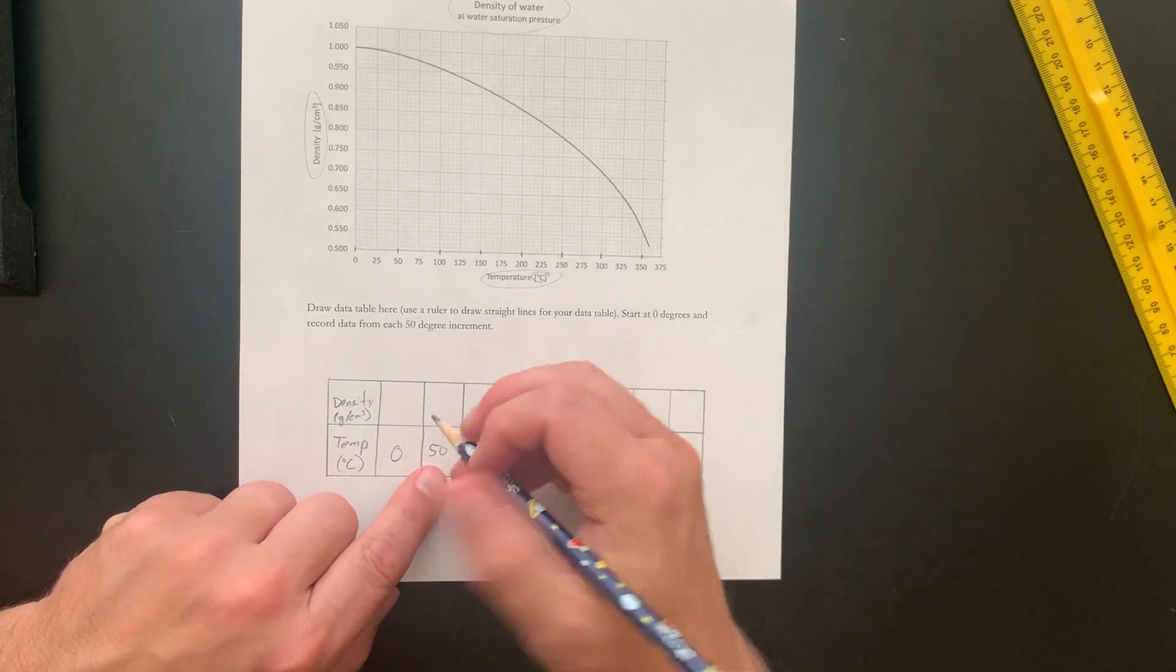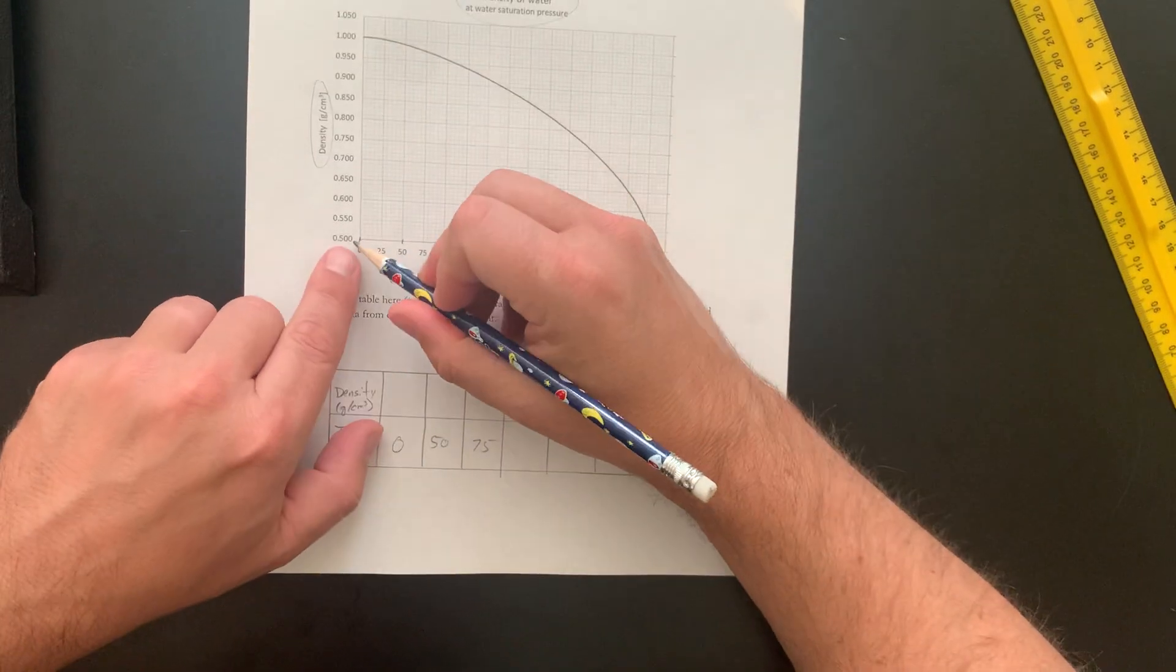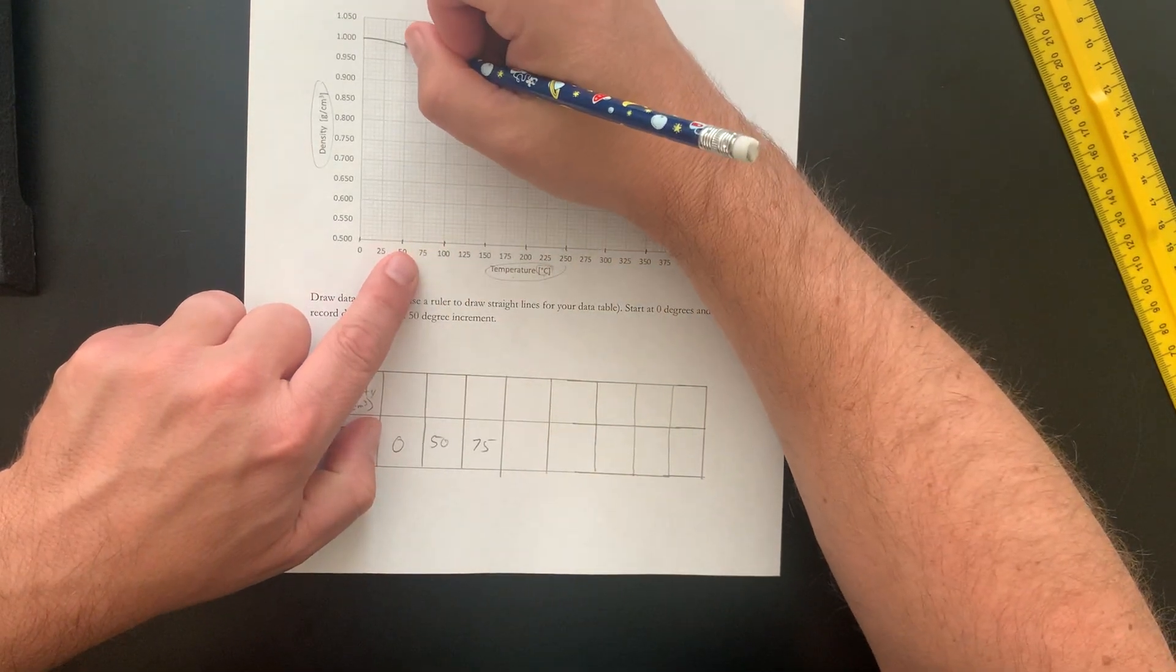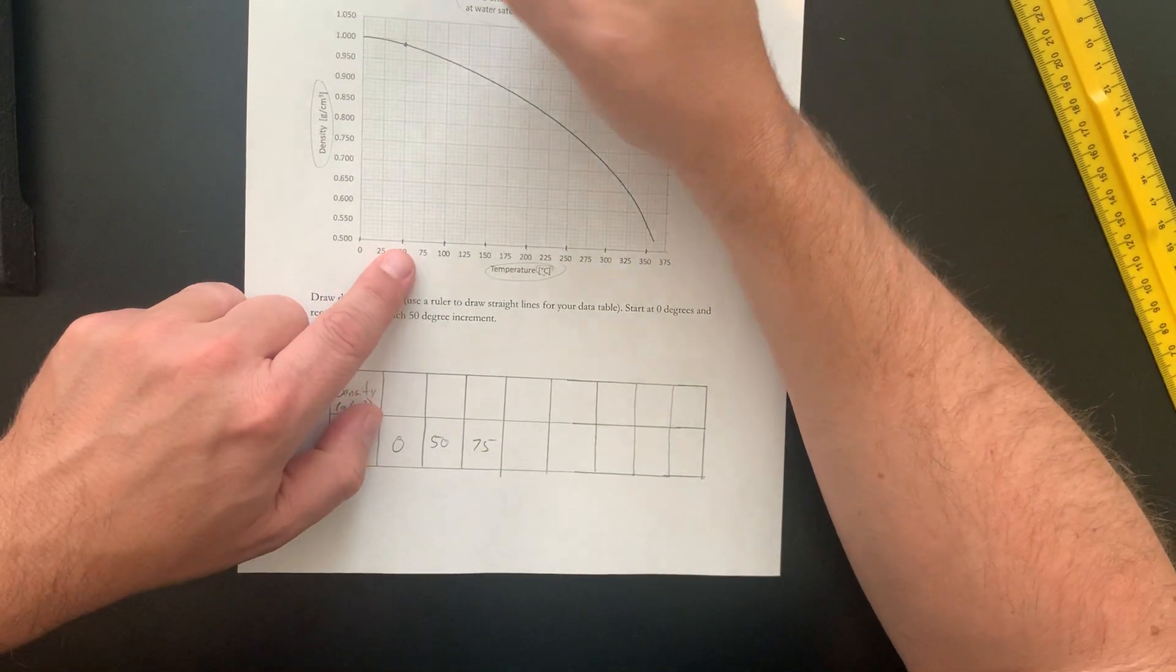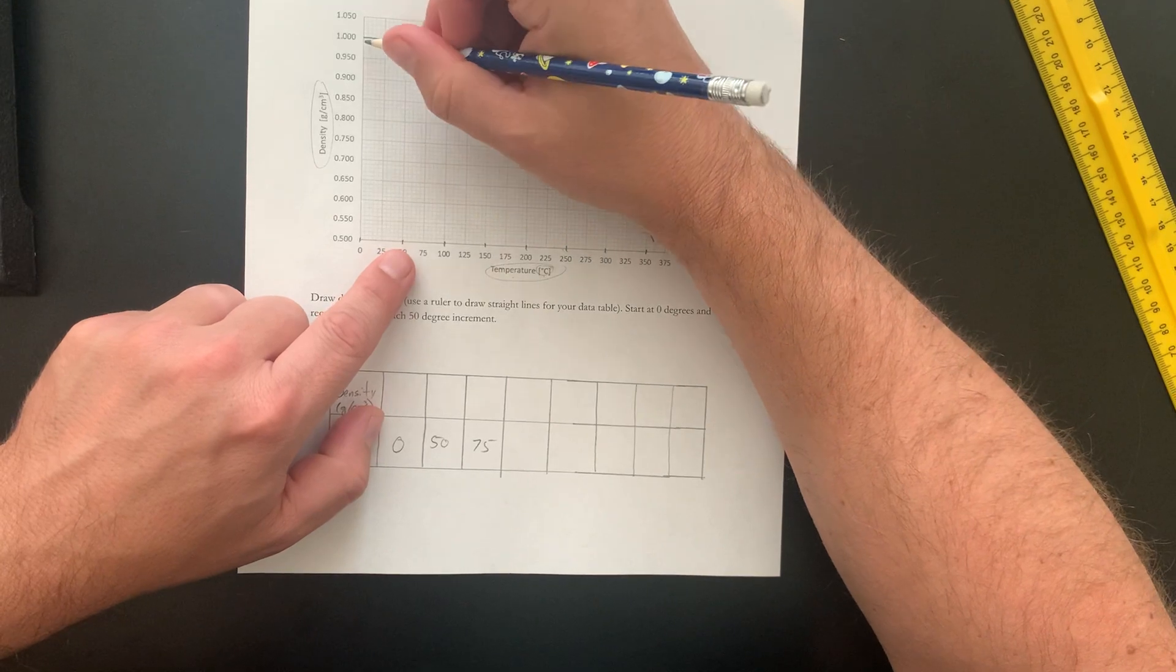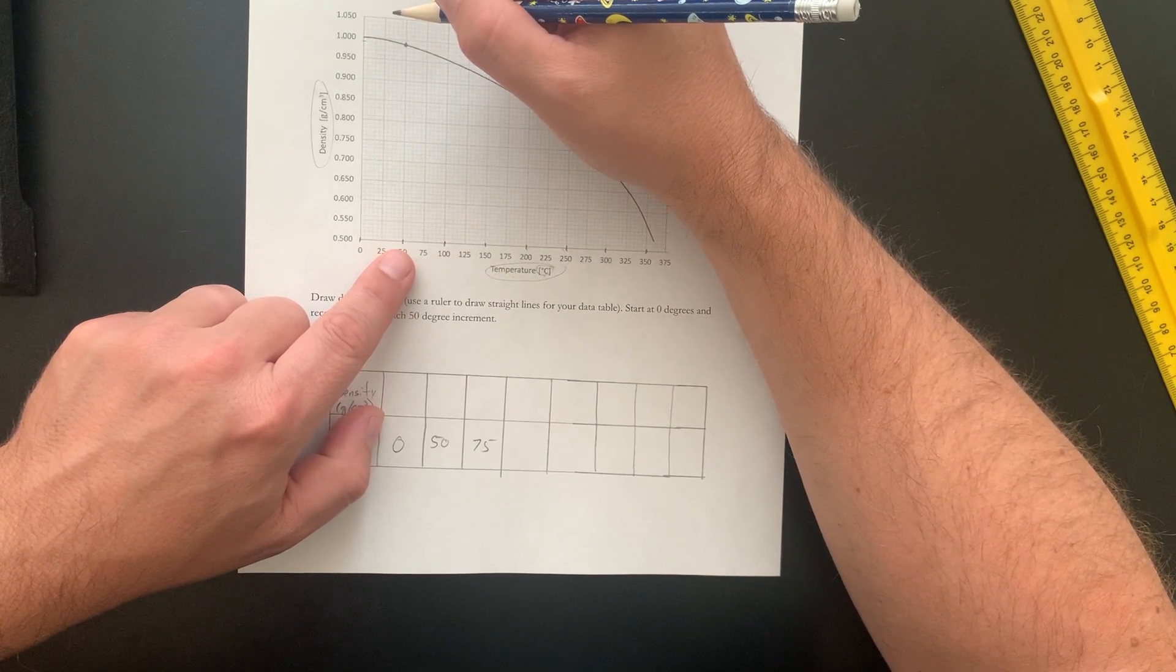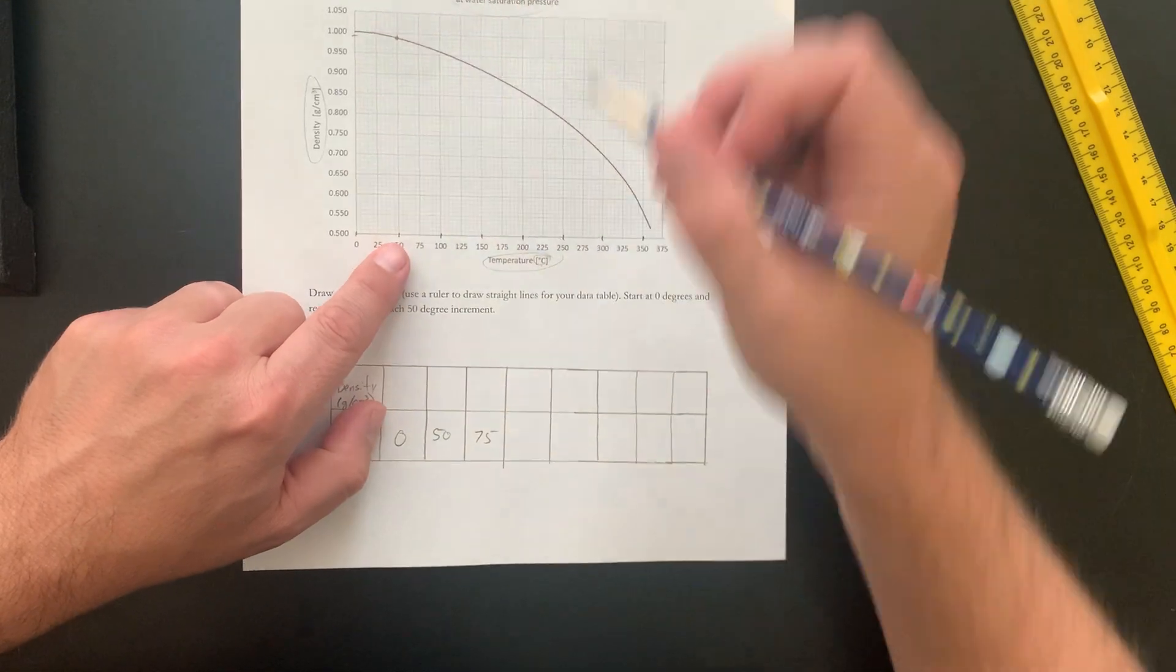So I'm just going to do the density for 50. So if I look at 50 here and I go all the way up to where it touches that line, that's the density that I want. And the density looks like 0.990, which is right there.